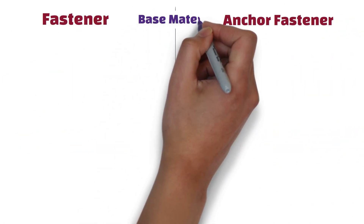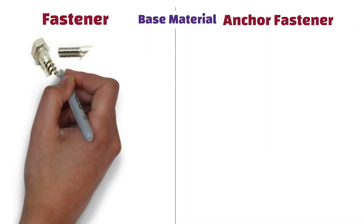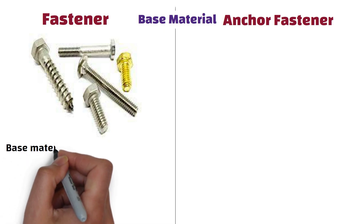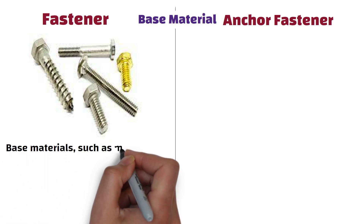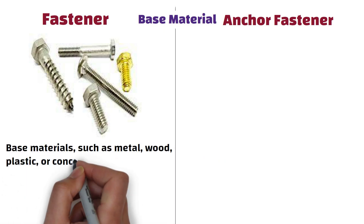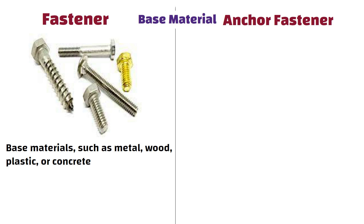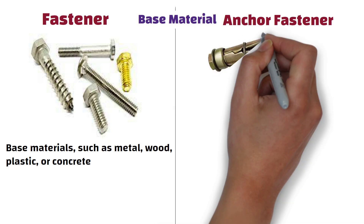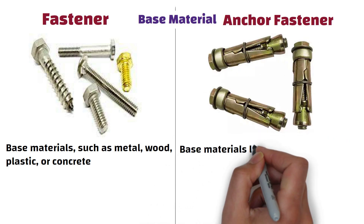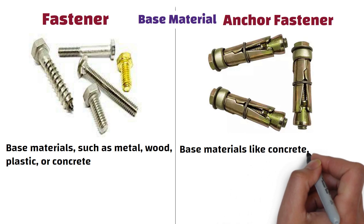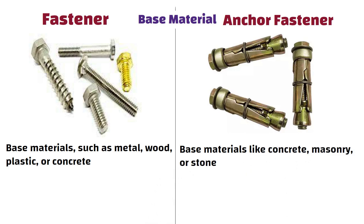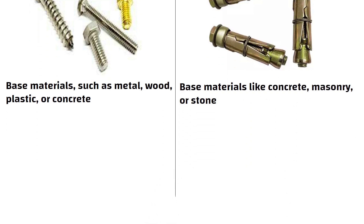Base material: Fasteners can be used in a wide variety of base materials such as metal, wood, plastic or concrete. Whereas anchor fasteners are primarily used in base materials like concrete, masonry or stone, where they can provide reliable anchoring.